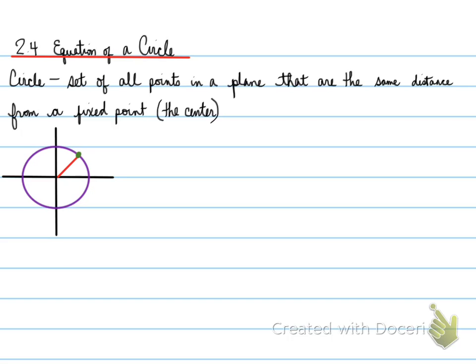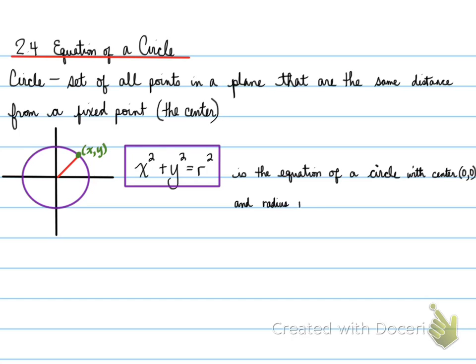So if you have some point such as x and y, the distance from the origin to x and y is going to be r. This formula represents the equation of a circle. x squared plus y squared equals r squared is the equation of a circle with center zero, zero, and radius r. That's right folks, r represents the radius.